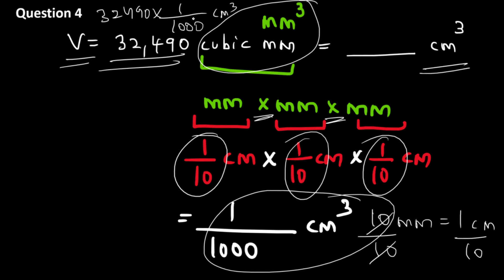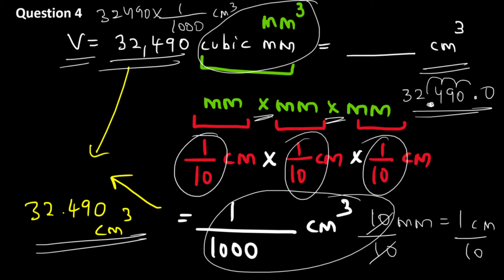Now in the denominator if you're dividing by thousand, you just need to move the decimal point by three places to the left. So currently in 32,490 the decimal point is over here, because this number is the same as 32,490.0. Now you need to move this decimal point by three places. So that's one, two and three. So it'll reach over here. That is when you divide 32,490 by thousand, you will get 32.490 and that is in terms of centimeter cube. So the correct answer to question number four is option C.